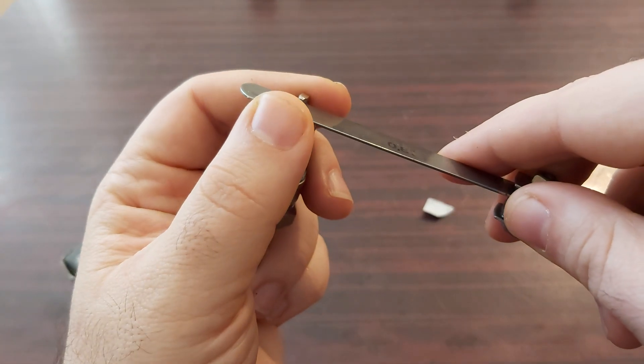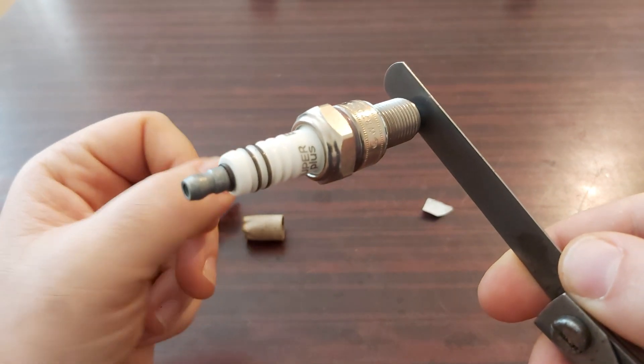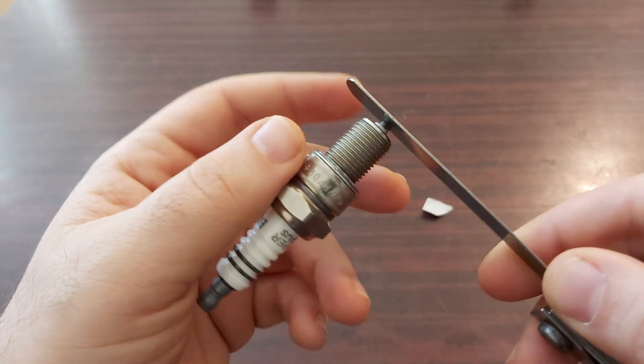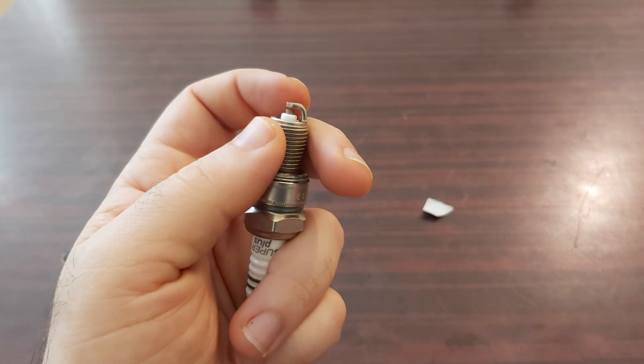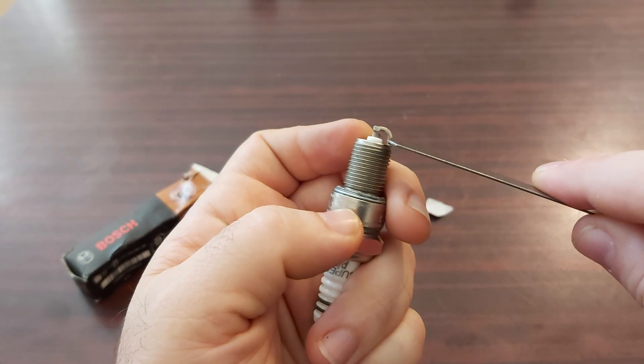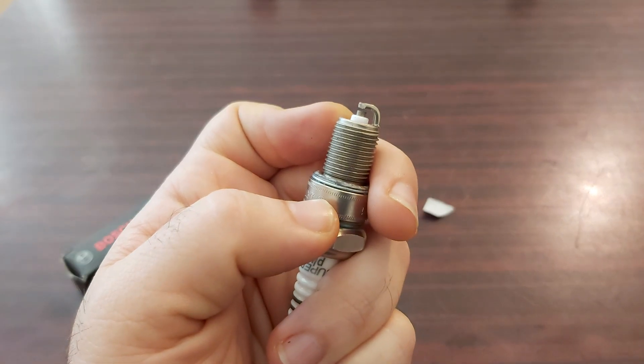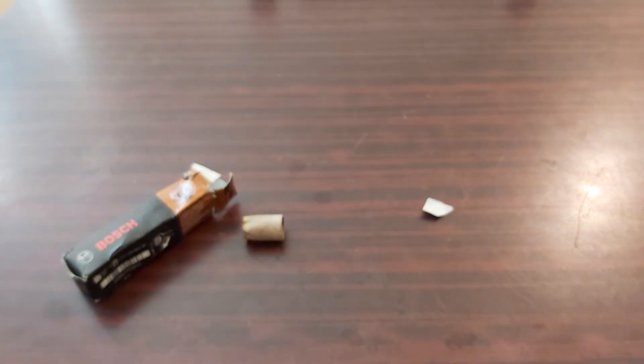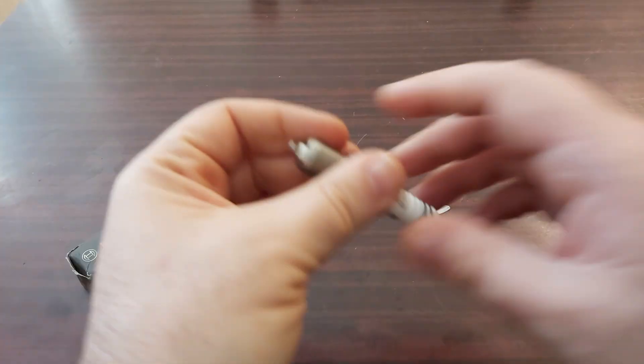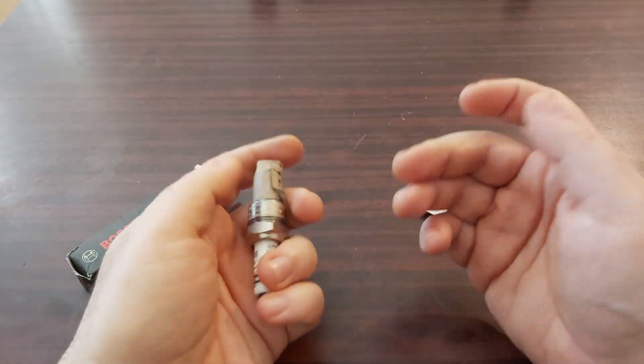This must be 0.8 mils. Here, as you put it there, that's how much your gap between the two electrodes - between this one and this one - must be for all the Mercedes vehicles.